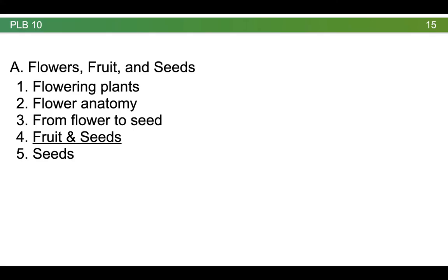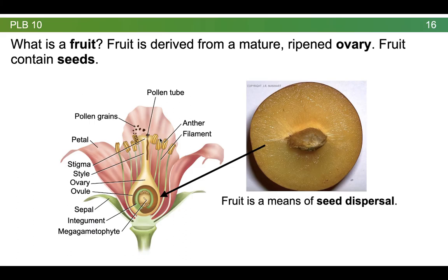Now that we have an understanding of the process of double fertilization, let's have a closer look and think about the difference between fruit and seeds. A good question now is, what is a fruit? Fruit is derived from a mature, ripened ovary. So it's something that forms after fertilization. Once double fertilization has happened, the ovary wall ripens and encloses the fertilized ovules. In general, the fruit always encloses the seeds. There are some exceptions, which we'll talk about a little bit later. The function of fruit is pretty clear — fruit is a means of seed dispersal. We eat fruit, sometimes we might eat the seeds, and then we transport them to another location. In the wild, animals eat fruit, oftentimes consuming the seeds but not digesting the seeds, later depositing them in a new habitat.